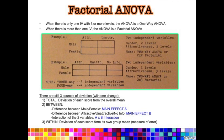An interaction effect is when two or more IVs act in combination to produce group variability. For example, folic acid and zinc must be taken together to increase sperm count. If you just looked at folic acid alone on sperm count, or zinc alone, you would not see a significant difference. But if you looked at people who took both together versus those who did not, you would see a significant difference. An interaction effect looks at the combination of your IVs and how it affects the DV.